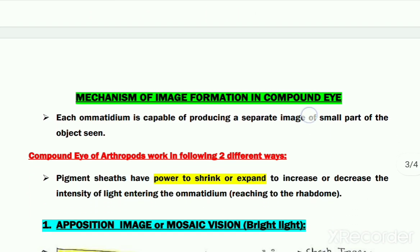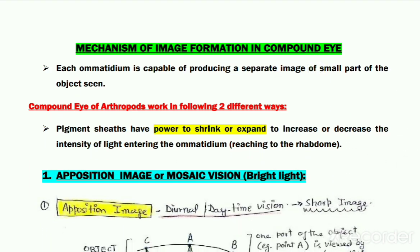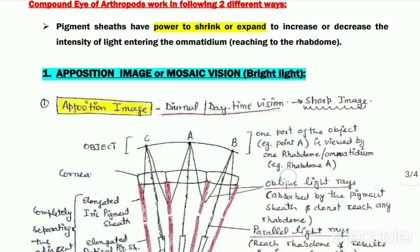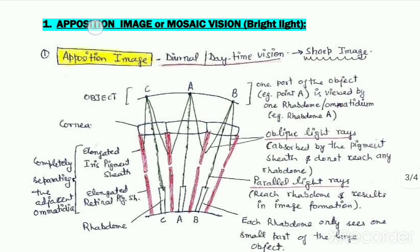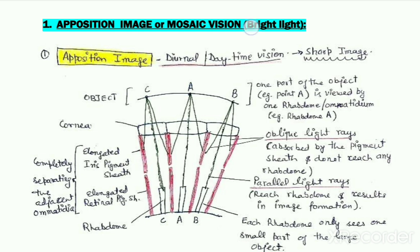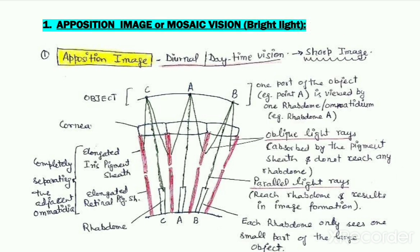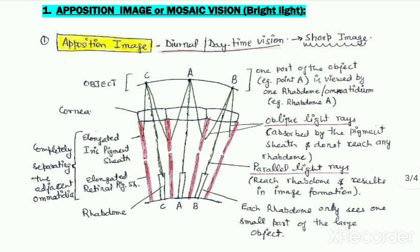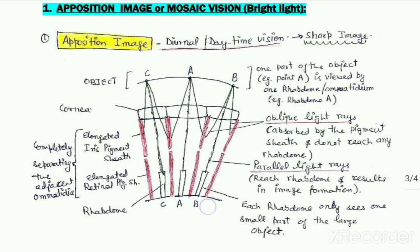Now let us look at the working of the compound eye, or the mechanism of image formation in the compound eye. The compound eye of arthropods can work in two different ways, and this is possible because the pigment sheaths have the power to shrink or extend depending on the intensity of the available light. The first type of image formed in the compound eye is termed the apposition image, and this is formed during the day when bright light is present. In a simplified diagram, three adjacent ommatidia are shown, termed A, B, and C.